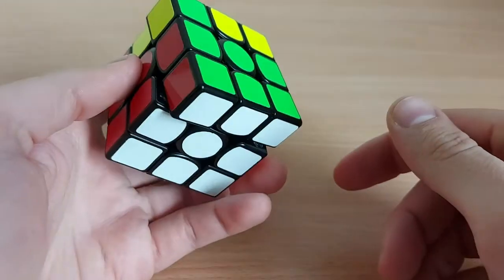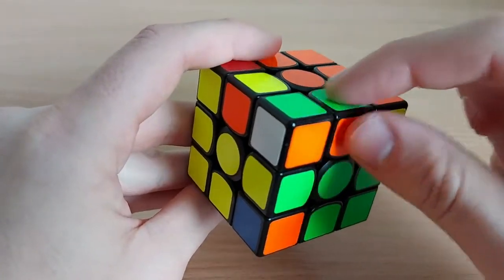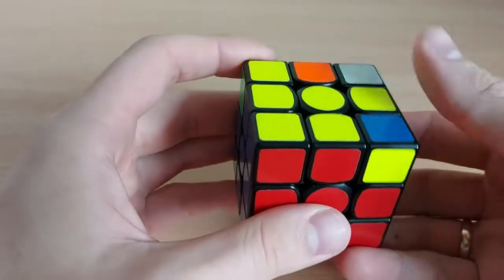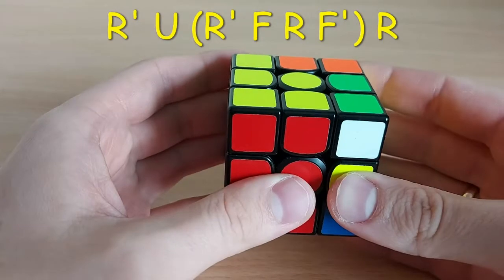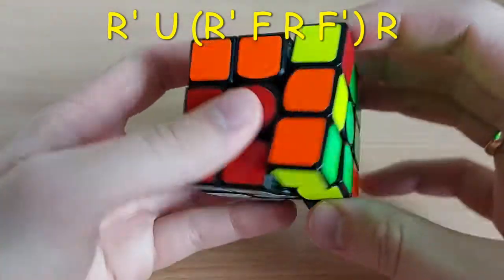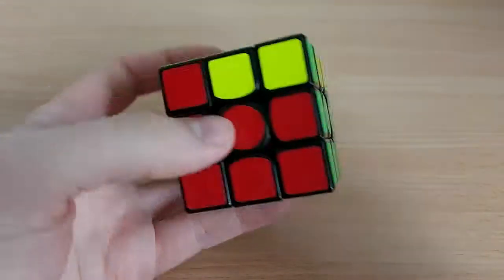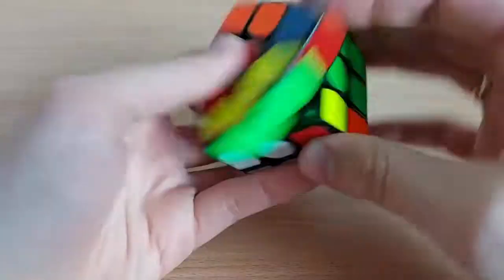and R. So once again, you have your pair over here, it needs to go to back right slot. What you do is operating U, sledgehammer, R, and you solve this F2L case.